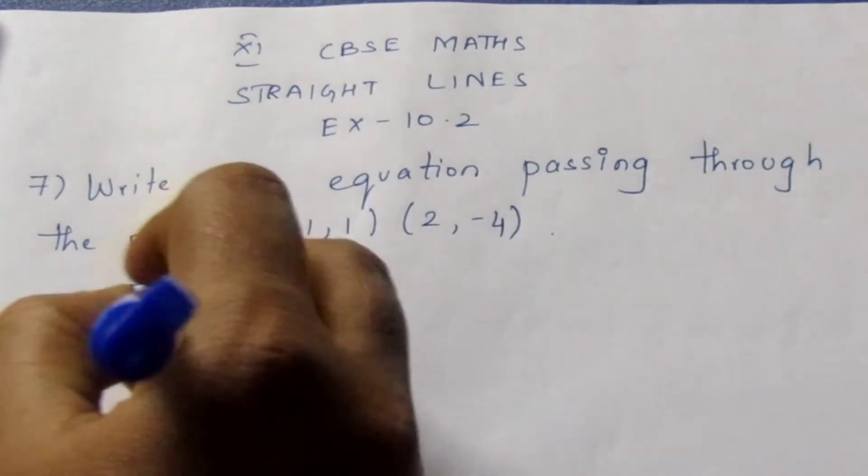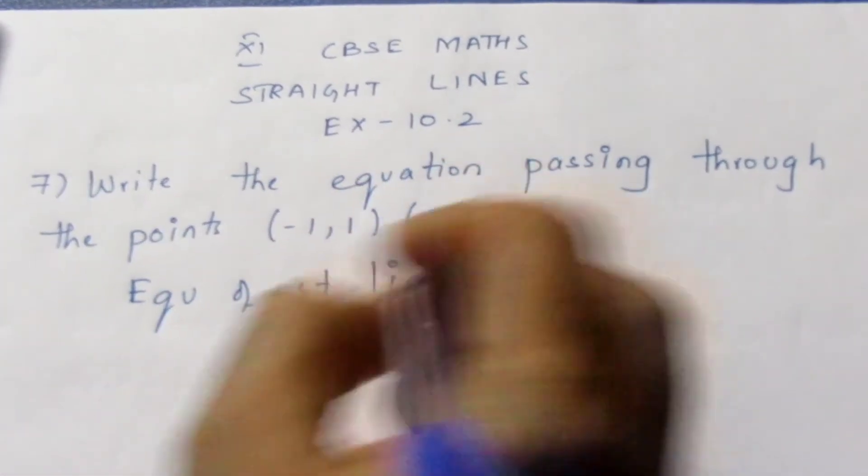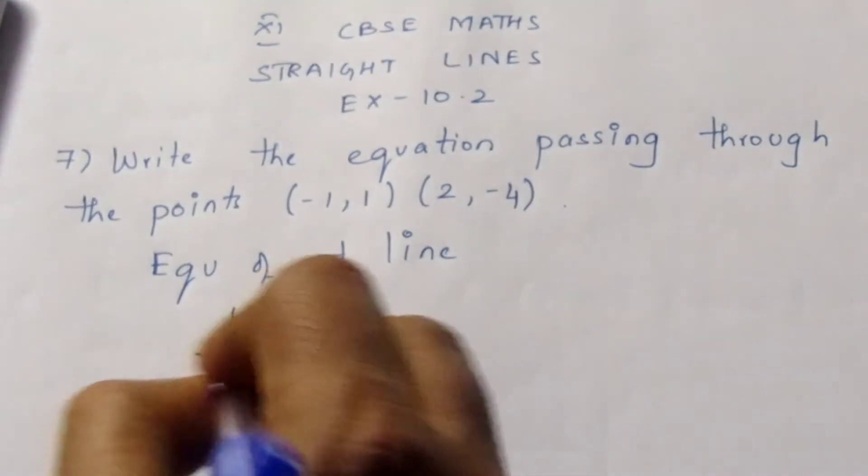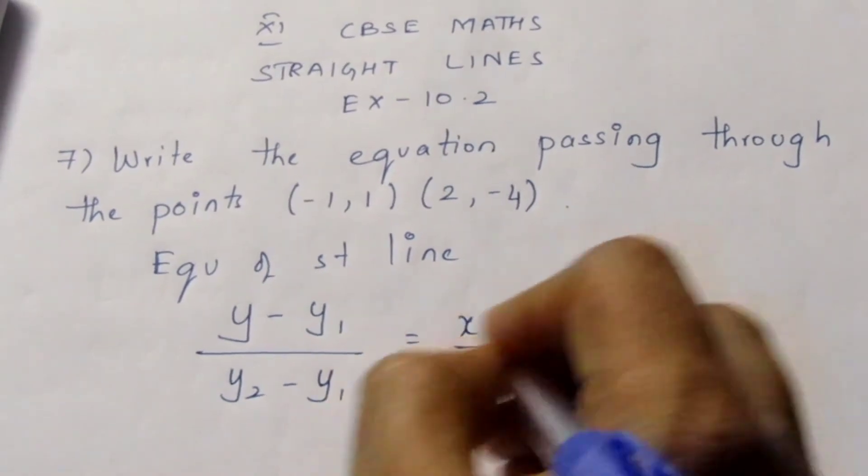For the equation of a straight line, if two points are given, then the equation formula will be (y - y₁)/(y₂ - y₁) = (x - x₁)/(x₂ - x₁).